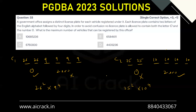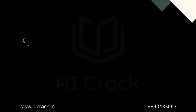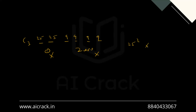We have to subtract all the cases where both O and zero are not present, because we have counted these cases twice. So case three is: O not present and zero not present. This gives 25 options for each letter position and 9 options for each digit position — so 25 squared into 9 to the power 4.